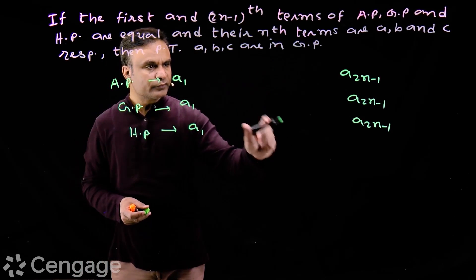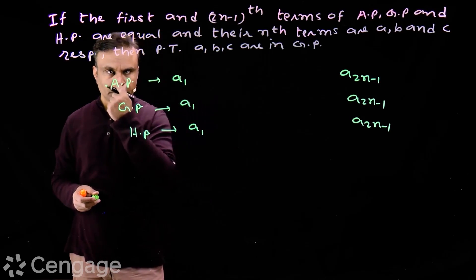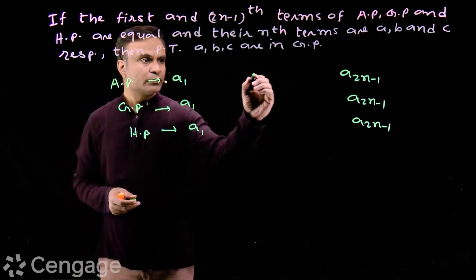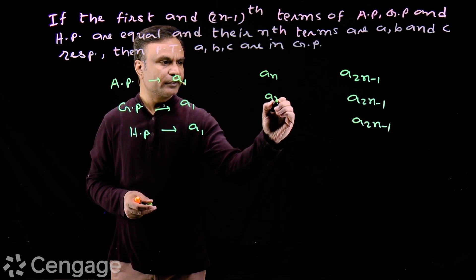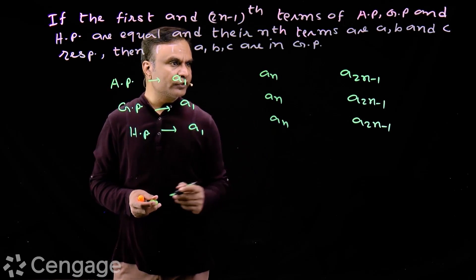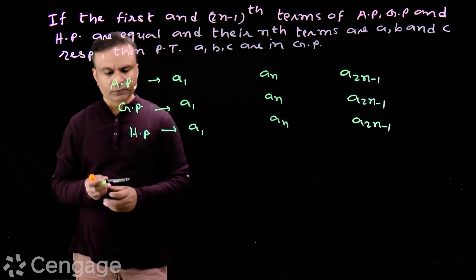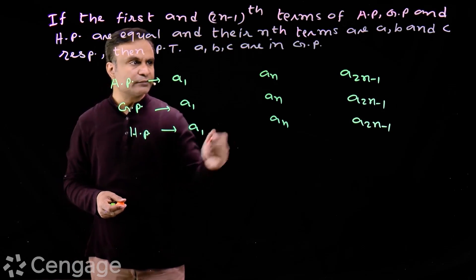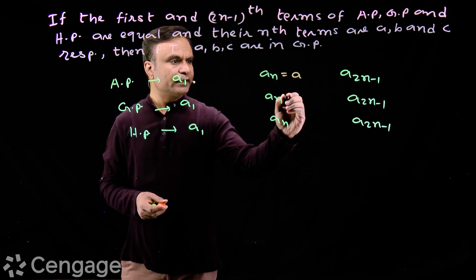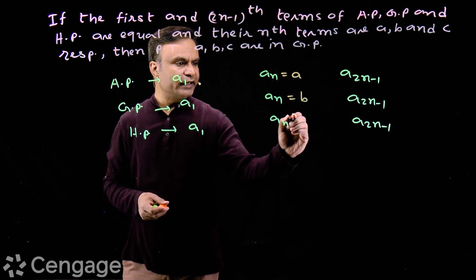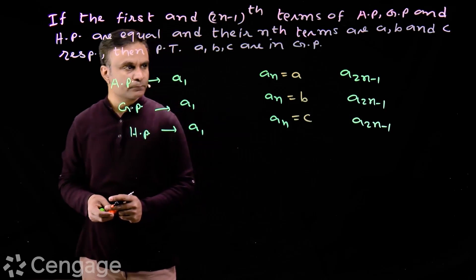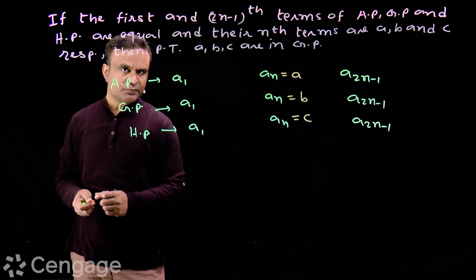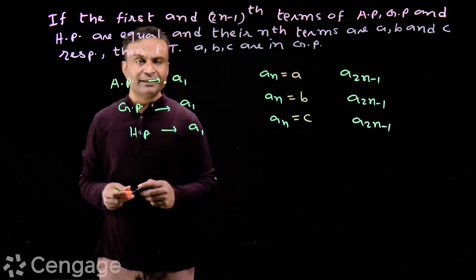What is the middle term in all these progressions? The middle term will be the nth term. So we write the middle term an in all three progressions. In the AP, the nth term is given as a. In the GP, the nth term is b, and in the HP the nth term is c. So in these three progressions — AP, GP, and HP — the middle terms are a, b, and c respectively.